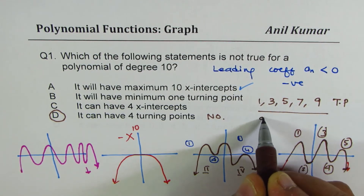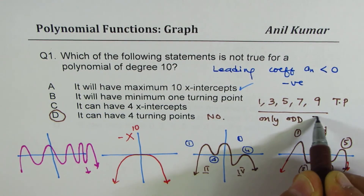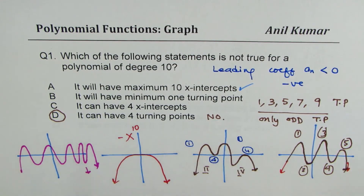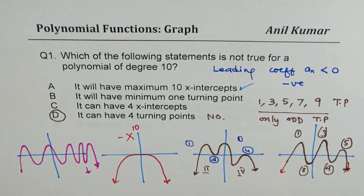So only odd turning points are possible. It cannot have an even number of turning points, and therefore option D is the correct answer — the statement that is NOT true. I hope the concept is clear. We'll take up similar questions relating to the graph of polynomials, and I hope that will give you a good concept about the topic. Thank you.